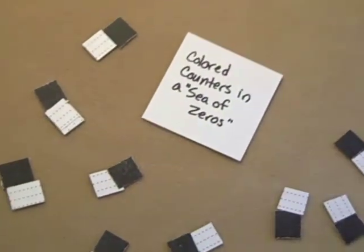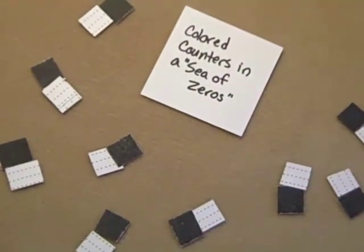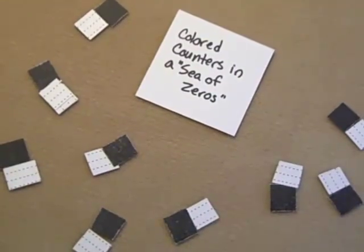The trick is that when you have addition, you're always putting stuff in. When you have subtraction, that second number gets taken away, and you just need to make sure you take away from the sea of zeros when necessary. Colored counters can be much easier if you do colored counters in a sea of zeros.